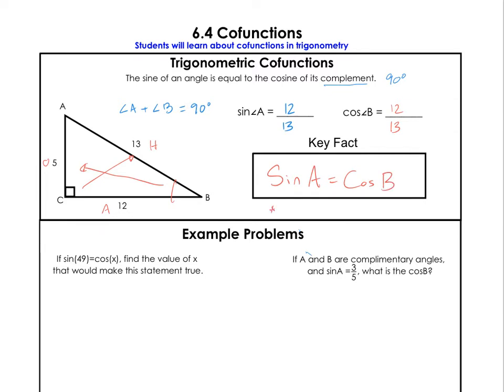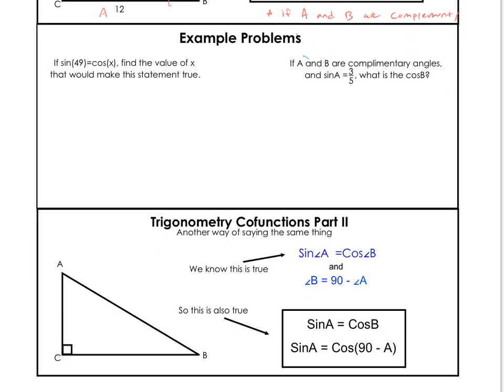That's our fact. The formula you need to know today is: sine of A equals cosine of B, and these two angles will always add up to 90 degrees. We're going to solve some problems based on these facts. Let's get into some problem solving.